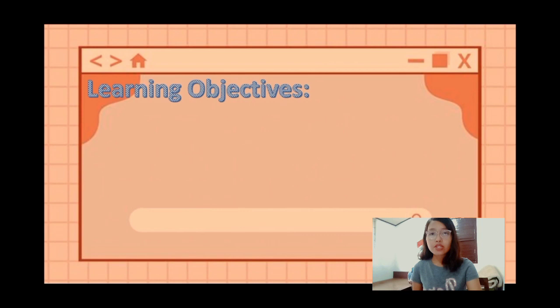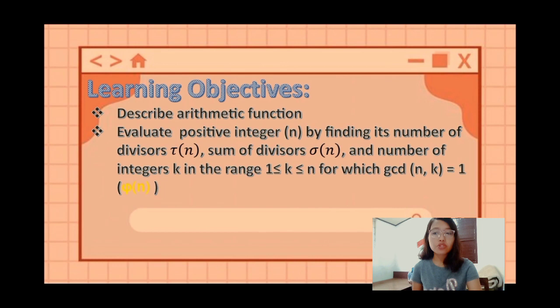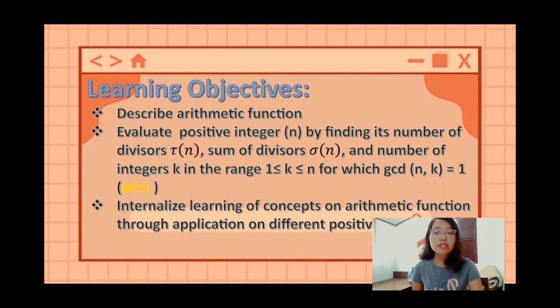First, describe arithmetic function. Then, evaluate a positive integer n by finding its number of divisors — the tau function of n — the sum of divisors, the sigma function of n, and the number of integers k in the range 1 ≤ k ≤ n for which gcd(n, k) = 1, which is the phi function of n. Then, internalize learning of concepts on arithmetic function through application on different positive integers.